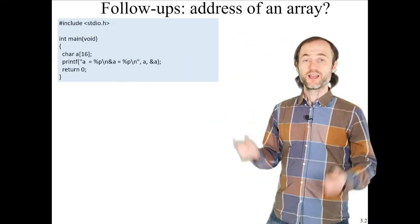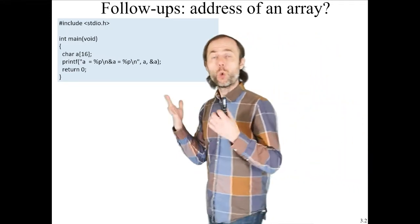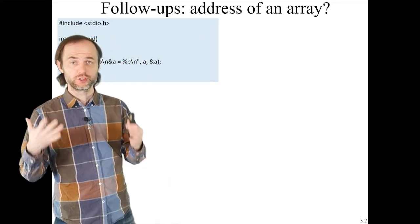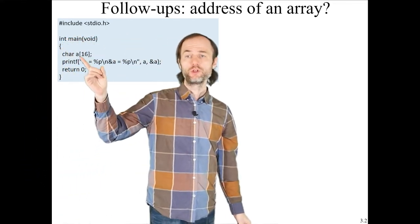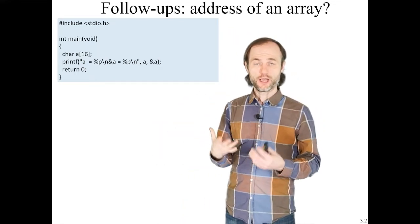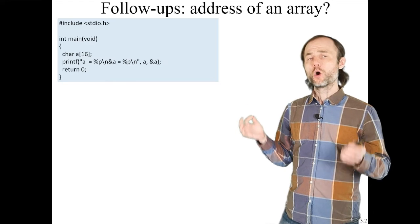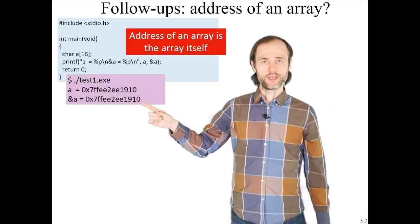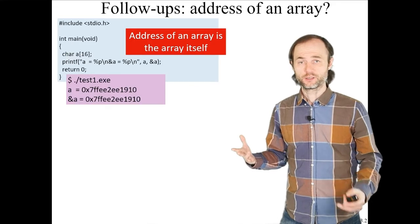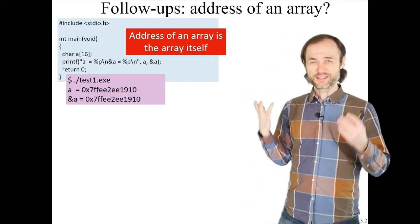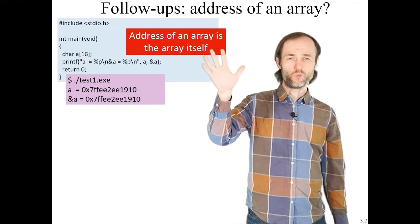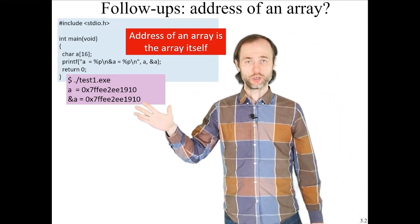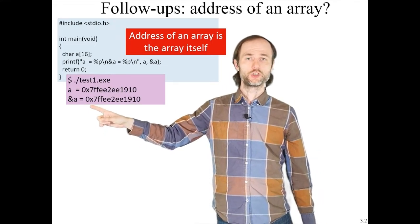Now we're going to take a look at the address of an array. When we define the address of an array, we've basically looked at the address of the first element — just 'a', the address of the zeroth element. However, what happens if we take the address of 'a' and print it alongside 'a'? The two addresses are identical. The address of an array is the array itself. Let's make sense of the hexadecimal 0x notation used for addresses.